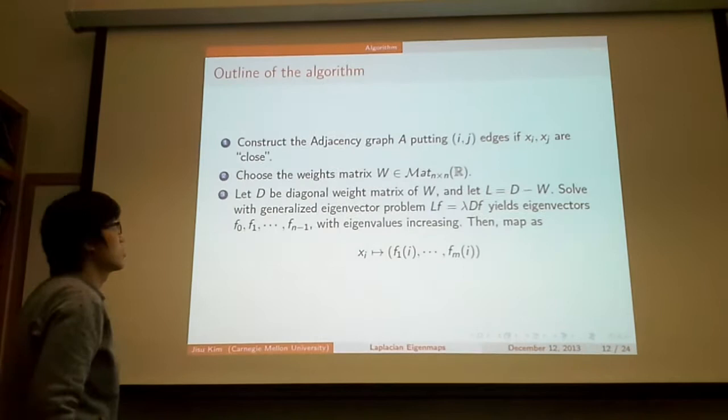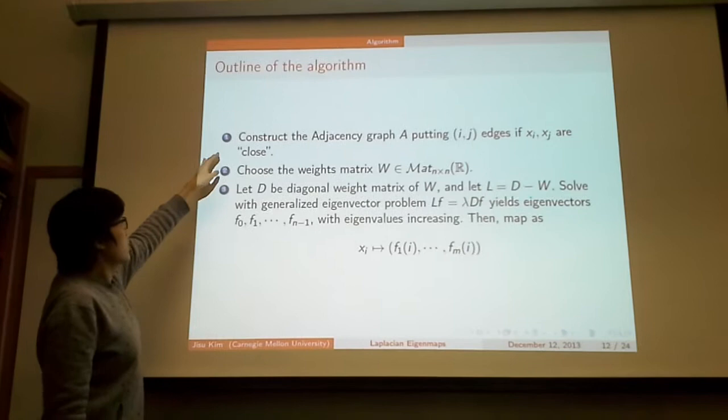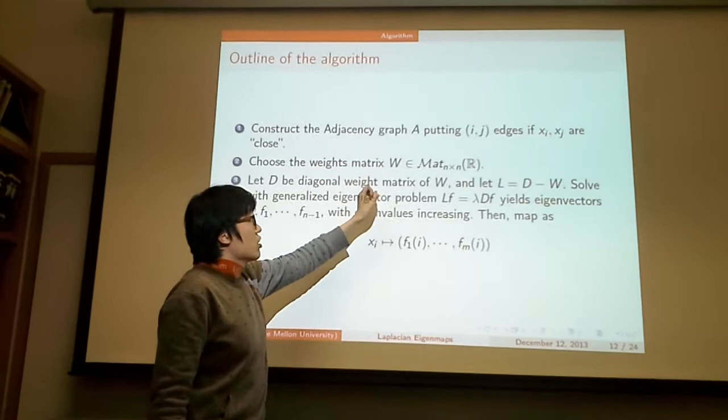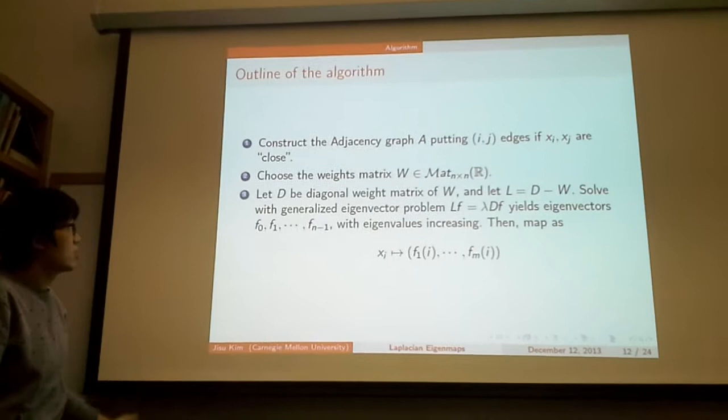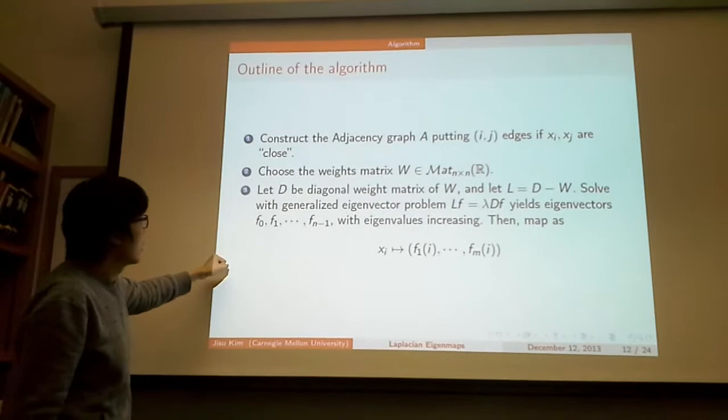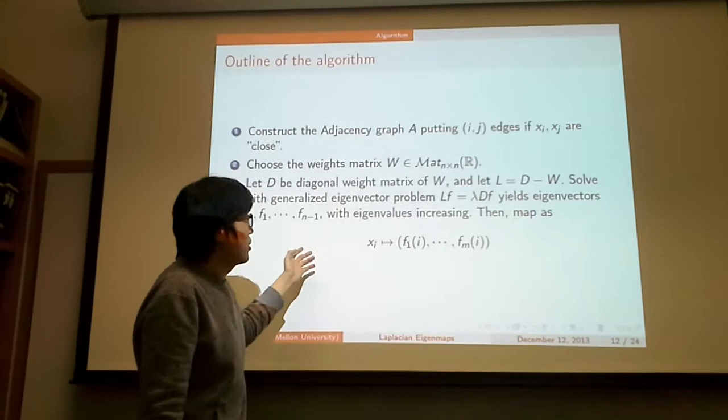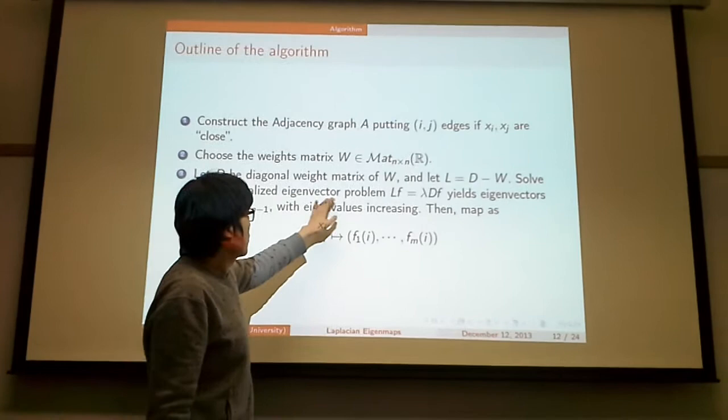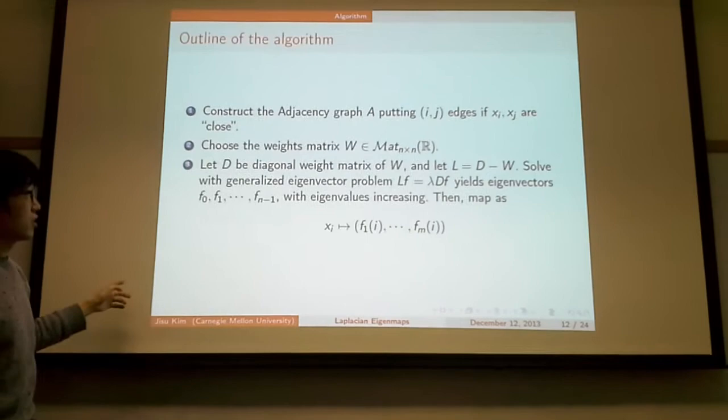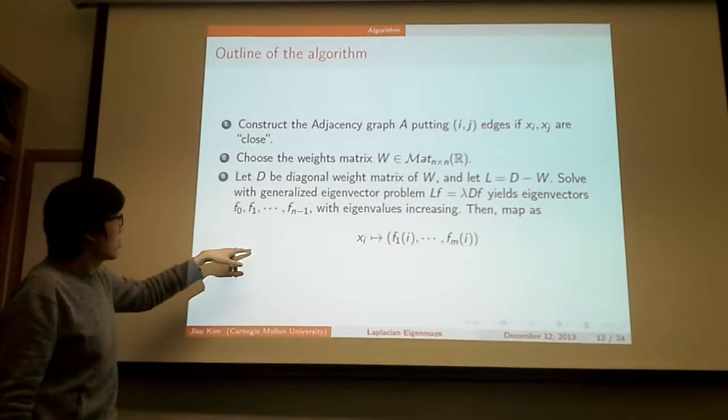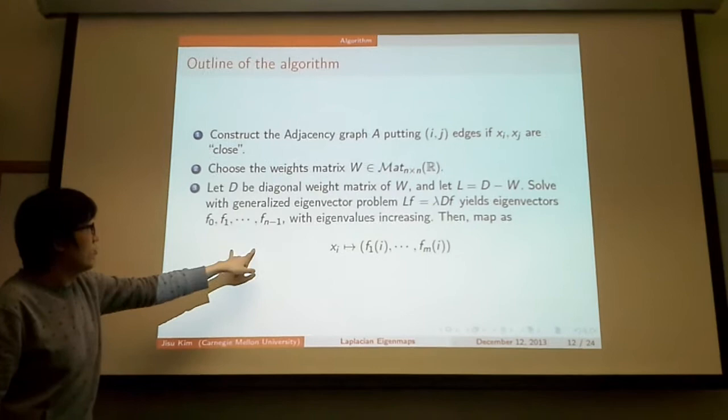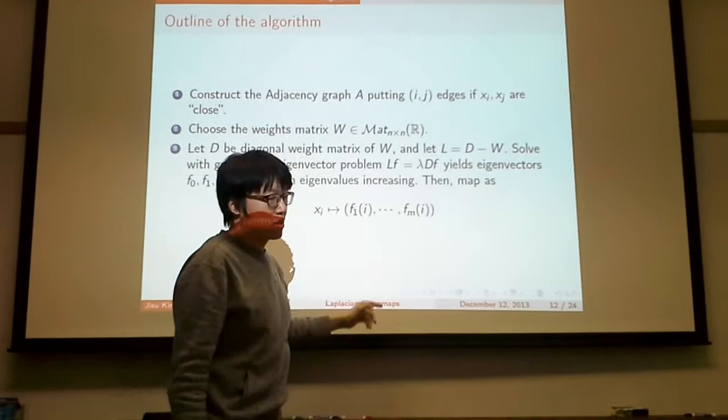Now I'm going to explain the algorithm. Actually, it is very simple. First, we construct the adjacency graph A with putting ij edges if xi and xj are close in some sense. Second, choose the weight matrix W. And third, let D be the diagonal weight matrix, which I will explain later, and let L be D minus W. Then solve the generalized eigenvalue problem Lf equals lambda Df. That would yield eigenvalues with eigenvalues increasing. Then choose m eigenvectors from f1 to fn for embedding.